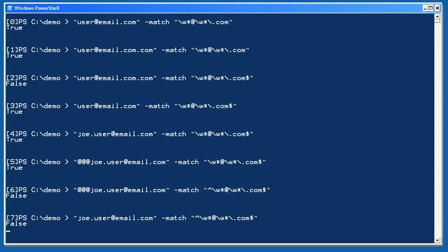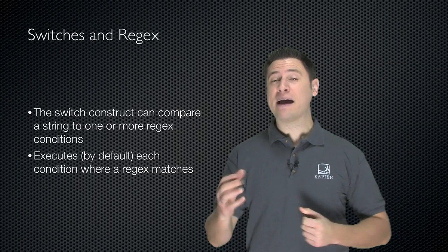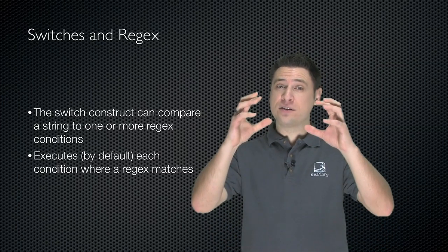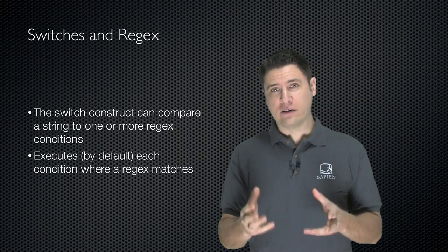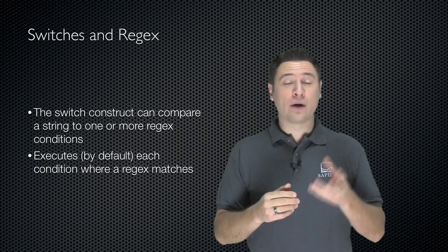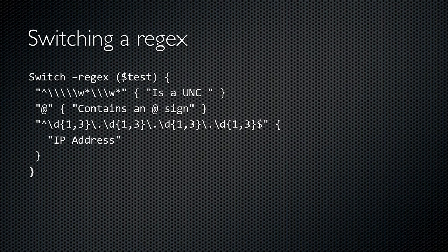The switch construct in Windows PowerShell offers an option to match against regular expressions. It can take a string or variable and compare it to one or more regular expressions, executing by default every condition that matches. Here's an example of a switch construct using the regex switch, where dollar sign test contains a string and the conditions are each regular expressions — each regex that matches the string will cause the associated code to execute.